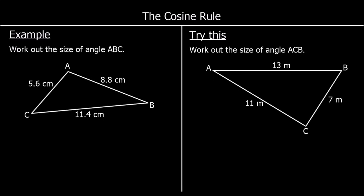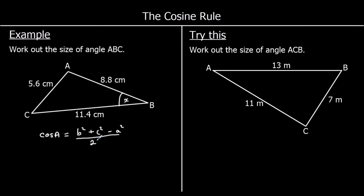Work out the size of angle ABC. This time we're working out an angle — angle ABC is this angle here, A to B to C, so that's our x. We can use the cosine rule when we know all three lengths and want to work out an angle. We use: cos A equals b squared plus c squared minus a squared over 2bc.